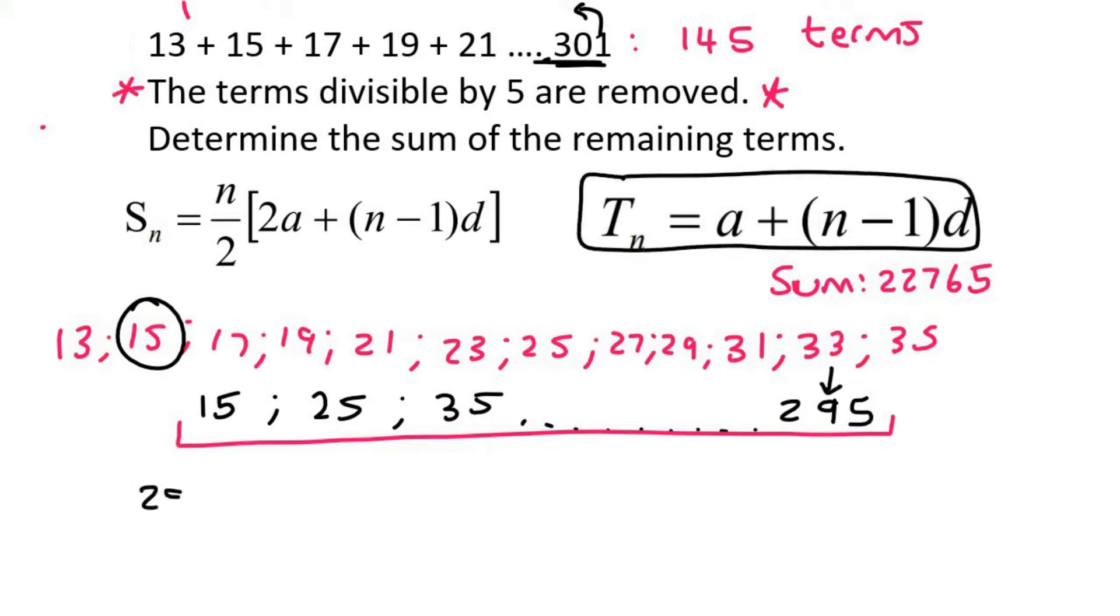And we can say 295 equals to A, which is 15, plus N we don't know. Now, the common difference is not 2, because we're busy with a new sequence now. So that's going to be 10. Now, we just move stuff around. I'm then going to divide by 10, which gives me 28. Now, I move the minus 1 over, so that means 29.